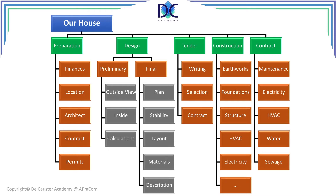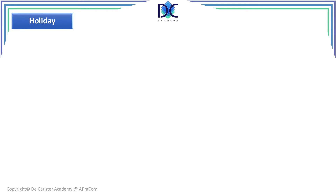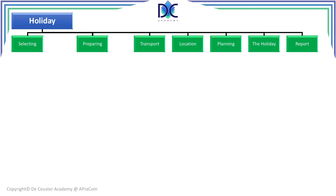Let's look at another project — planning a holiday. The high-level elements are: selecting the holiday you want to make, preparing for it, looking at transport, the location, planning the holiday itself, the execution of the holiday, and then reporting — for example, making a nice photo book about your holiday.